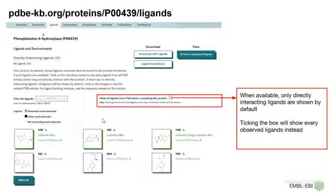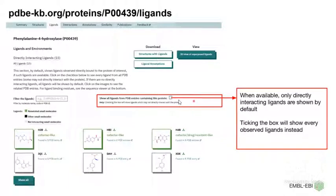This section shows you all the ligands. By default, it only shows the ligands which are directly bound to the protein of your interest. However, if you click on this button, you can see all the ligands which may or may not be directly interacting with your protein. In this case, the directly interacting ligands and all ligands are the same — all the ligands are interacting, and hence you see the same number.